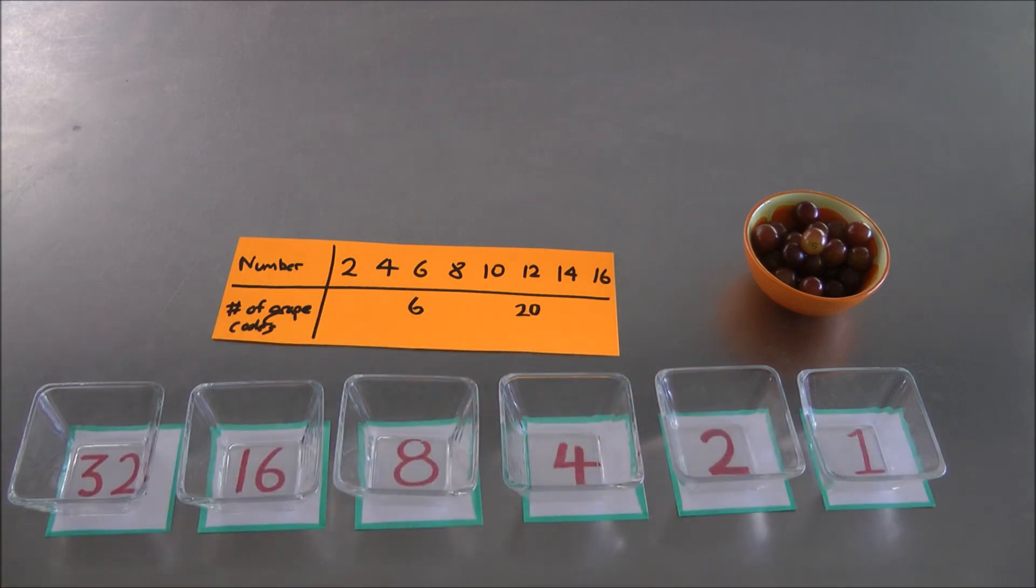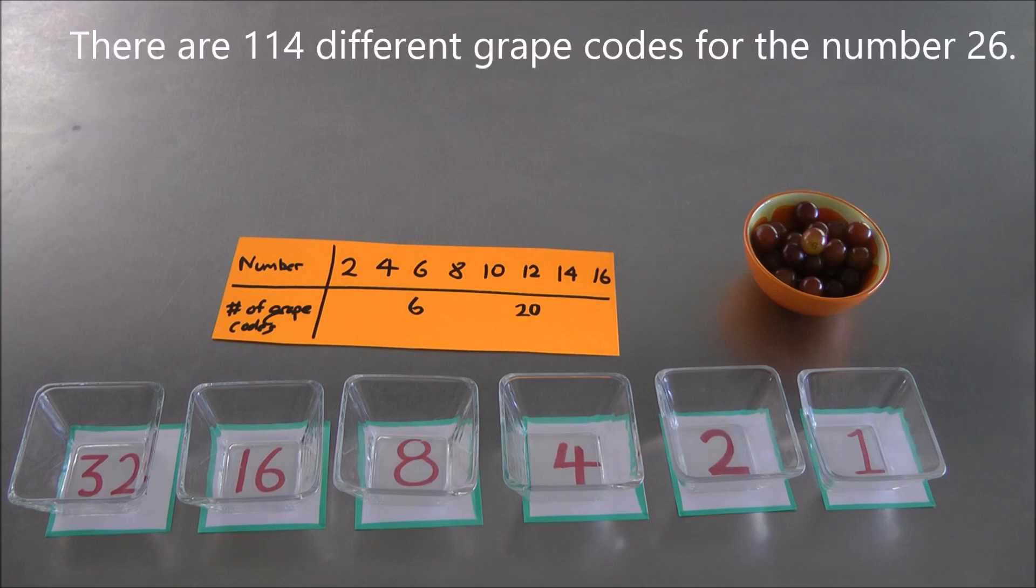You should double check me on that. And that's all we worked out. I did claim earlier that there are actually 114 different grape codes for the number 26. That's very hard to double check, but you can double check me on that one too.